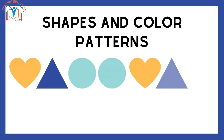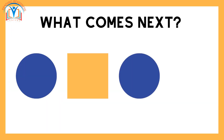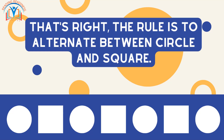Now, let's look at some shapes and colors patterns. A shape pattern is a sequence of shapes that follows a rule. For example, circle, square, circle, square is a shape pattern. Can you tell me what the rule is? That's right, the rule is to alternate between circle and square.